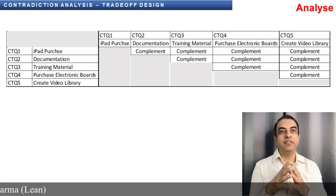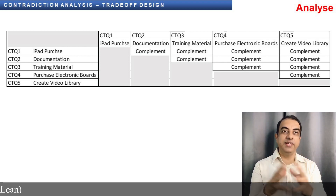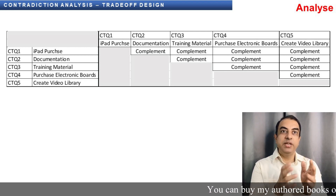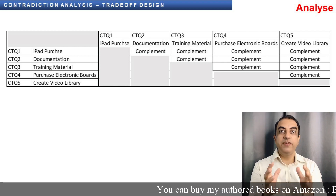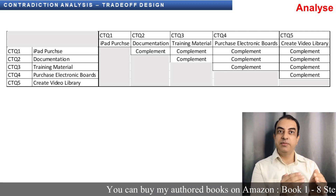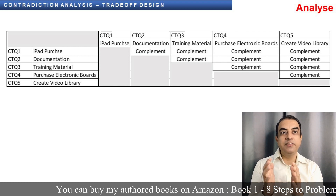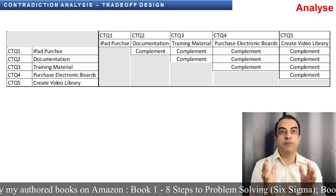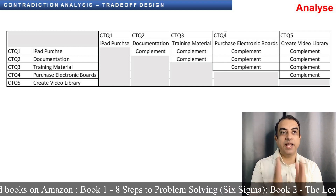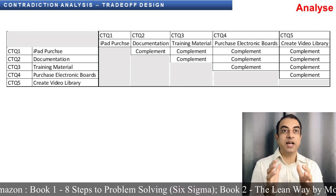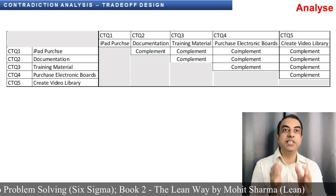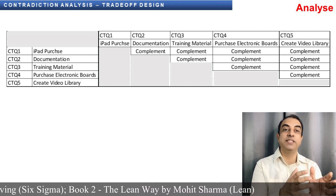To understand contradiction analysis and trade-off design, let us take an example of a car. In a car, mileage and speed are two CTQs. If we increase the mileage, speed is impacted, and if we increase the speed, the mileage is impacted. So there is a trade-off between the two CTQs and a line is drawn — for example, a car can attain a mileage of 15 km per litre and a speed of 60 km per hour in 0 to 10 seconds.